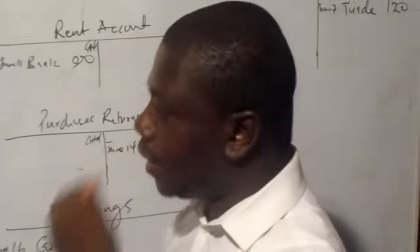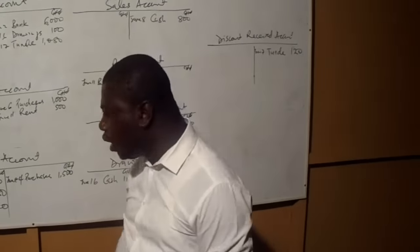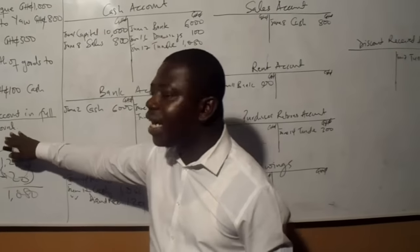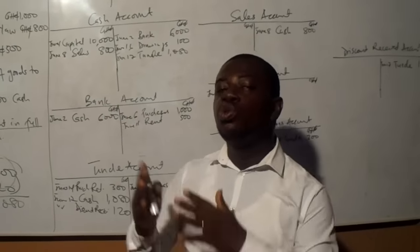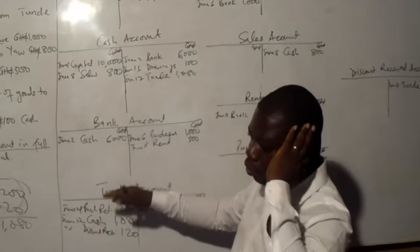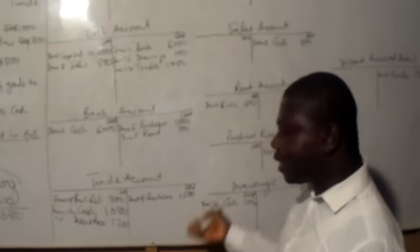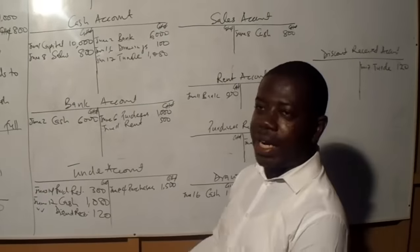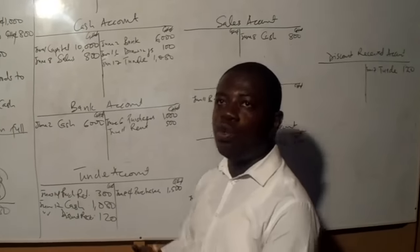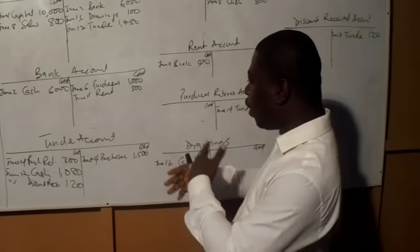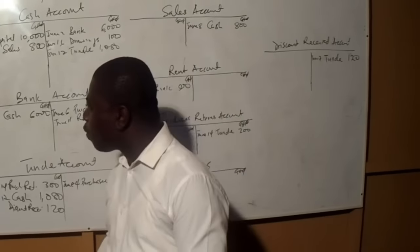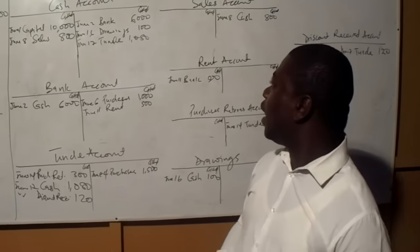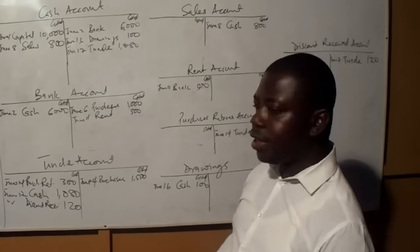What we have done is two double entries: one between cash and Tunde, and another between discount received and Tunde. Any time you do a double entry involving a discount like this, you do two double entries — four entries total. The first double entry is between cash and the creditor; the second is between discount received and the creditor. The opposite is true for discount allowed: when a debtor pays and we allow a discount, we create a discount allowed account. Next, we will look at balancing of accounts and extracting a trial balance. Thank you.